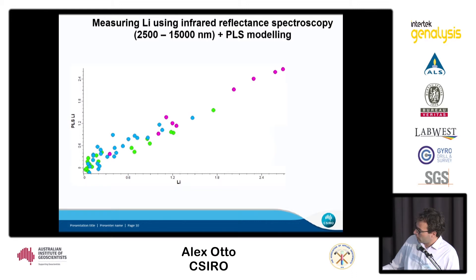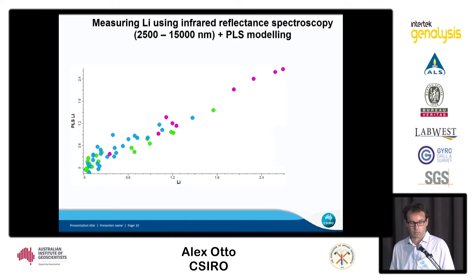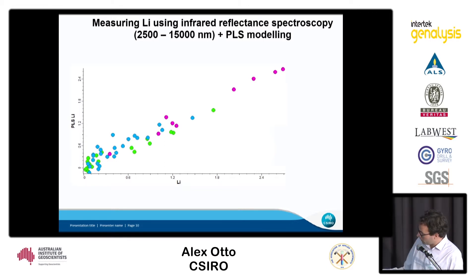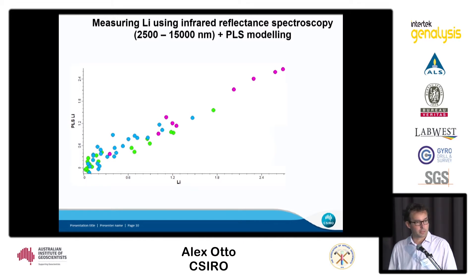On the y-axis you see the modeled lithium values from the spectra. Interestingly, the model is based on two spodumene deposits, while the pink samples are actually from a petalite deposit — and it works fairly well with the same model.